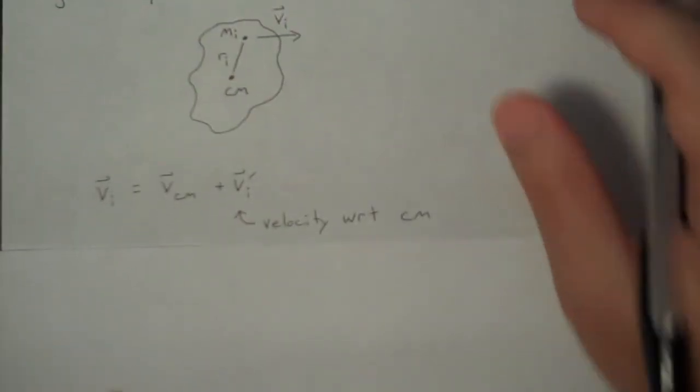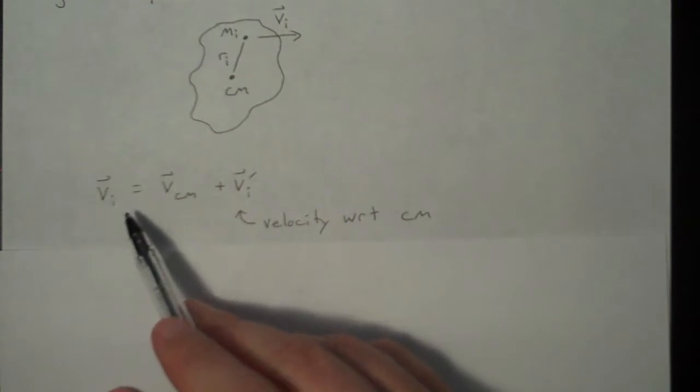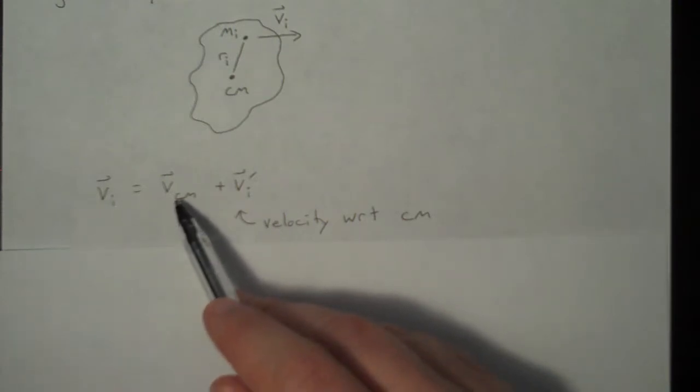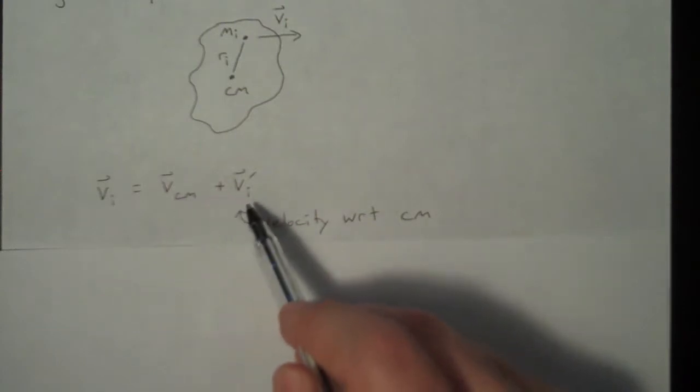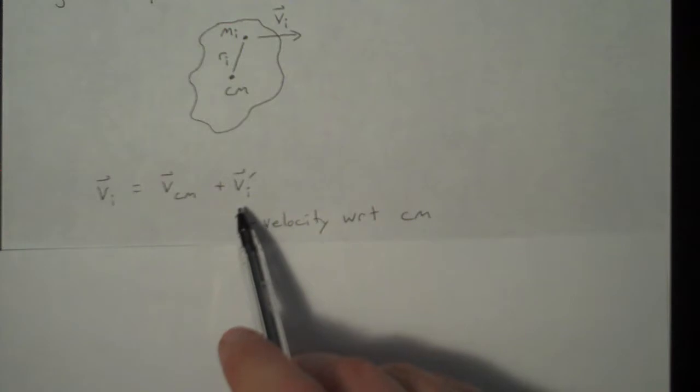So vi is going to be equal to the velocity of the center of mass. If the whole rigid body is moving, you have to consider that. And then you need to add it to whatever velocity that point might have with respect to the center of mass.